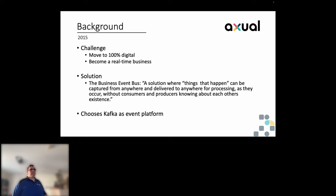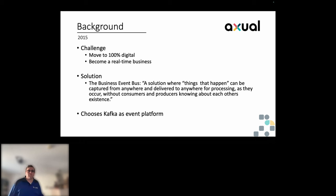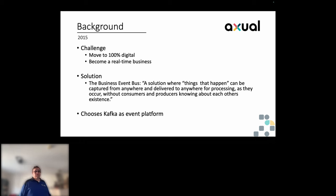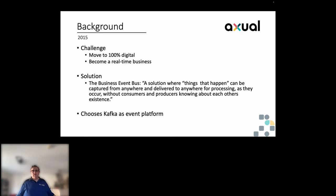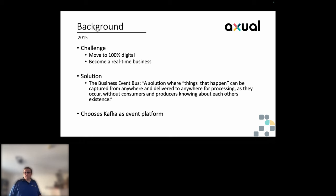The enterprise we're talking about is a bank in the Netherlands. In 2015 they decided they wanted to become a 100% digital bank and a real-time business. They started designing and analyzing their systems and came up with a product called the Business Event Bus — a solution where things that happen can be captured from anywhere and delivered to anywhere for processing. It relies on consumers and producers not knowing about each other, and being generally available within the enterprise. The focus was on business events and organizational events, not just technical events like you often see with Kafka.